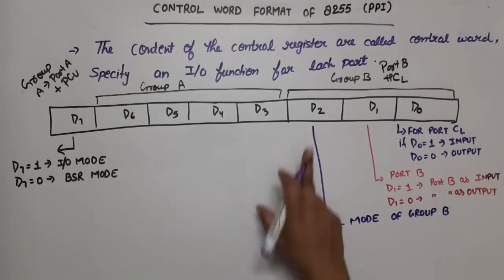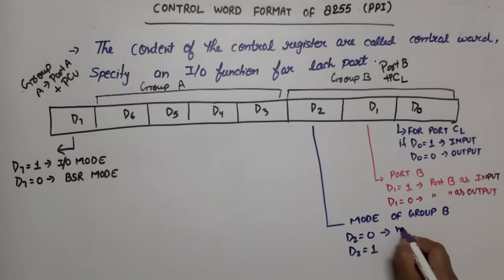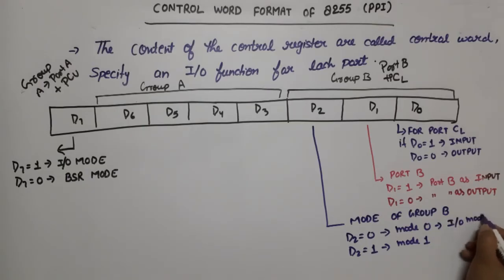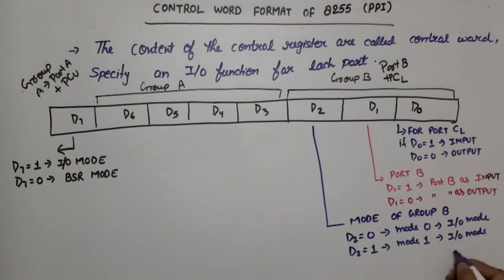D2 is for Group B mode selection. It is a single bit, so it will be either 0 or 1. If D2 is 0, Group B works in mode 0. If D2 is 1, Group B works in mode 1 with handshaking.